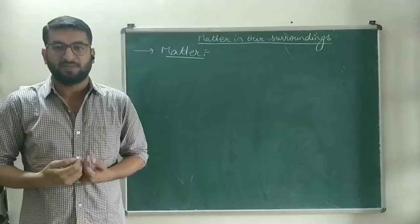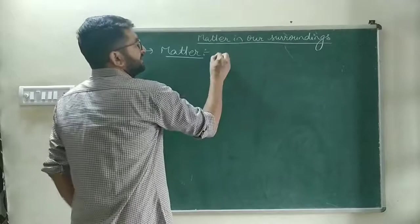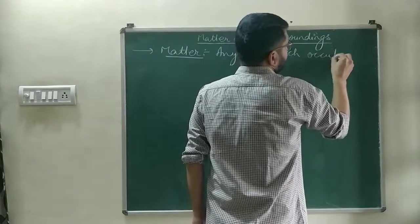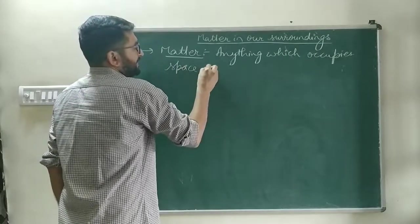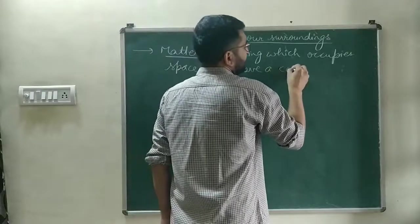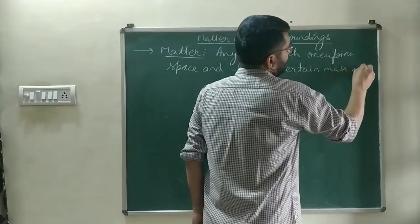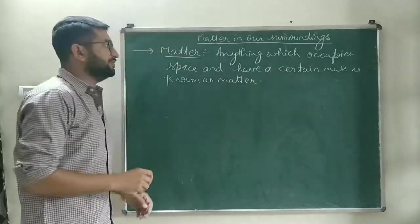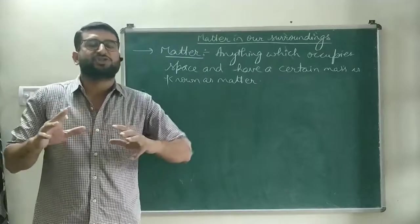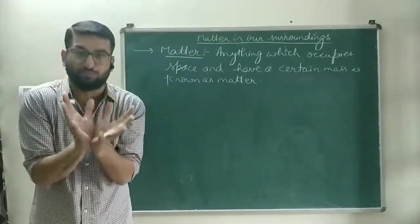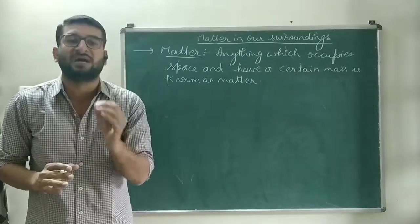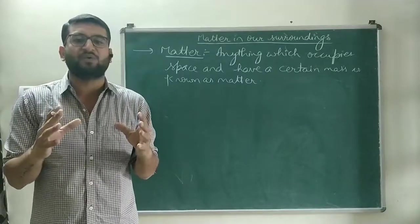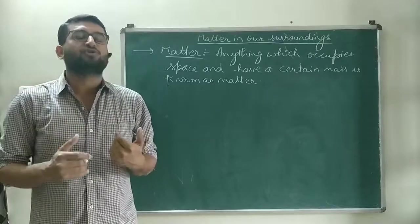What is matter? Anything, any substance which occupies space and has a certain or fixed mass is known as matter. So, any substance which has a fixed volume and has a fixed mass — that is what we call matter.